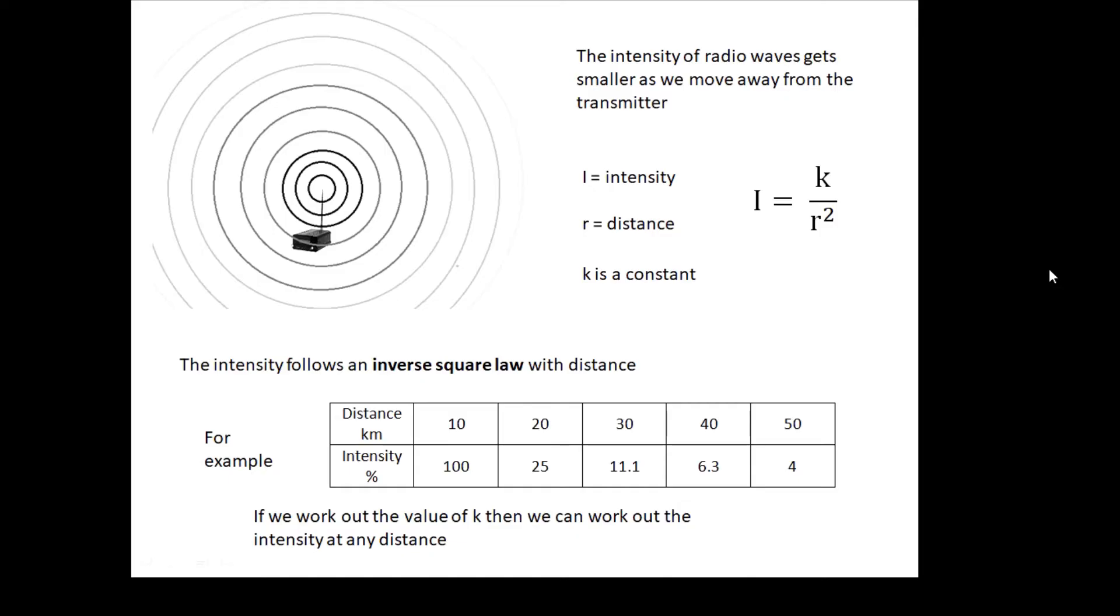Here's a radio transmitter. You see the waves coming out and they get weaker and weaker as you move further away because the waves spread out more. We can use this equation, I = k/r², to work out the intensity. Notice that it's an inverse relationship. The intensity gets smaller and follows what we call an inverse square law.